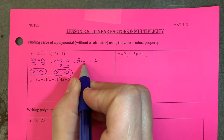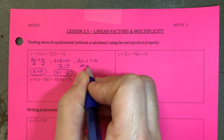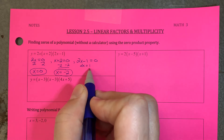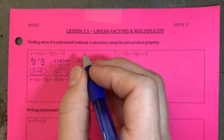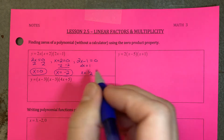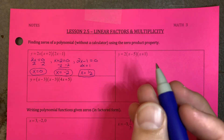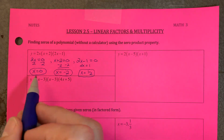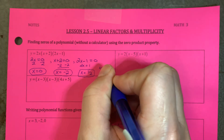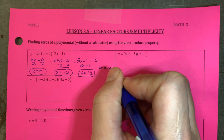For the last one, add 1 to both sides to get 2x equals positive 1, then divide by 2. Since 1 doesn't divide by 2 evenly, we leave it as the fraction x equals 1 half. If you wanted to write all three zeros together in one line: x equals 0, negative 2, one half.